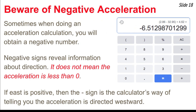When doing acceleration calculations, you may get a negative number on your calculator — you haven't done anything wrong. A negative sign reveals information about direction, not magnitude. It doesn't mean less than zero or a very small number. It means something like the acceleration is directed westward or leftward. If east is positive and you get a negative result, the acceleration is simply directed westward.